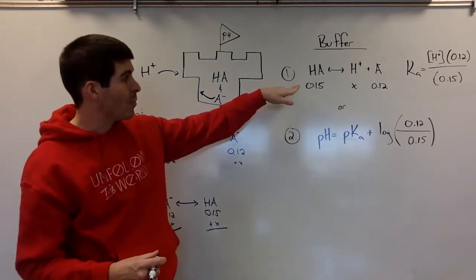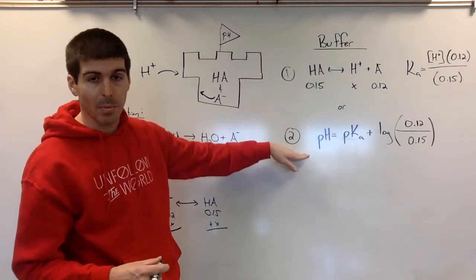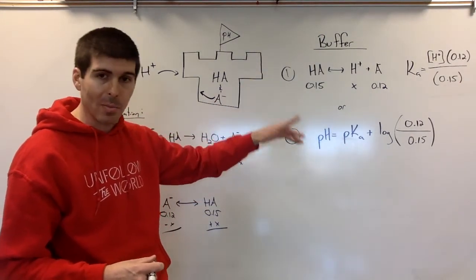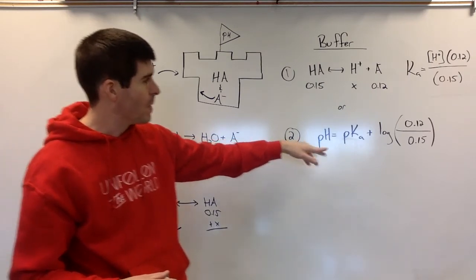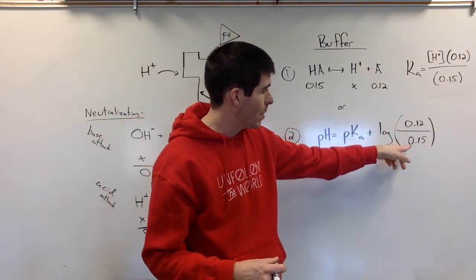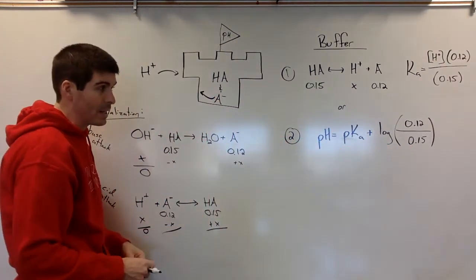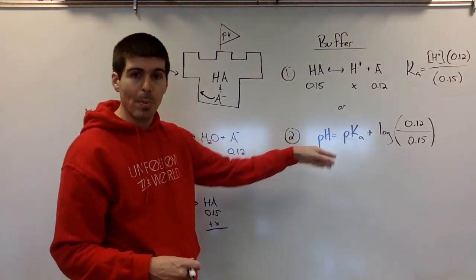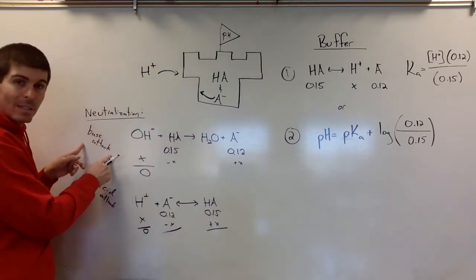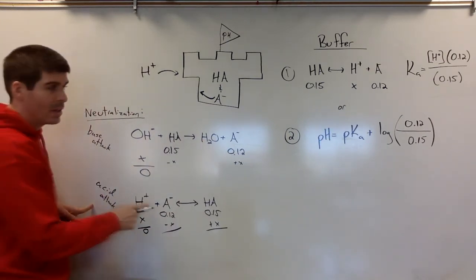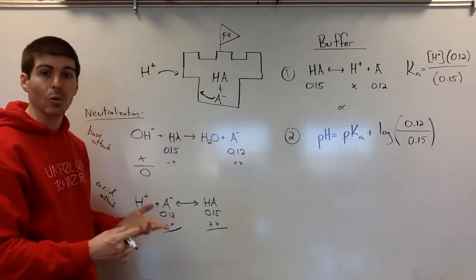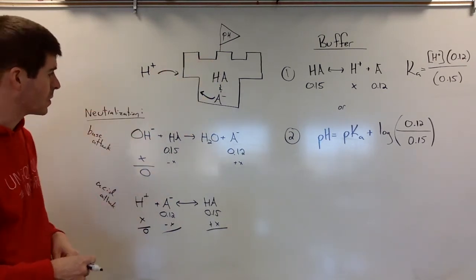We need to come over here and then calculate the pH again. Henderson-Hasselbalch is the best bet. If you've got the buffer, the conjugate base over the acid, you can plug these molarities in and figure out what the new pH is after the base attack or the acid attack. You would calculate a new pH with new molarities.